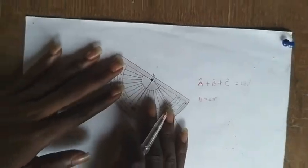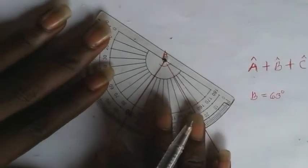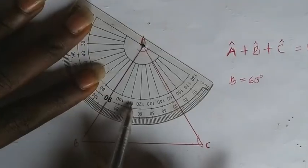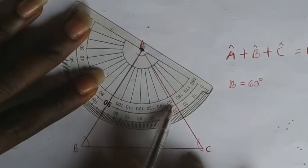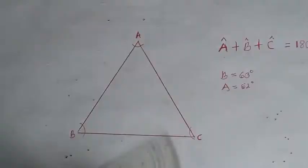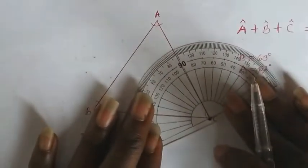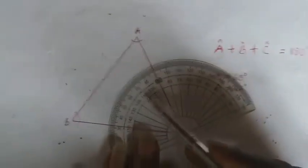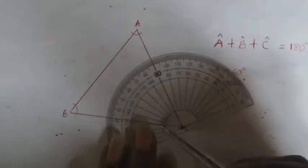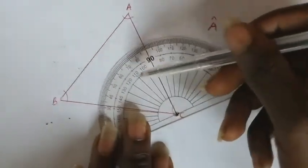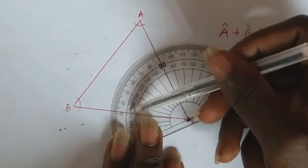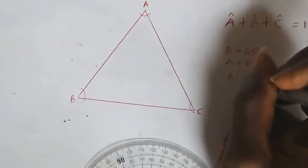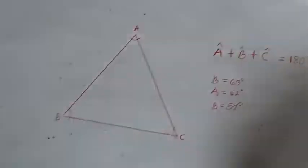If I want to measure angle A, I'll position the protractor again. Let's see, I'm measuring: 10, 20, 30, 40, 50... 57 degrees. So angle A is 57 degrees.